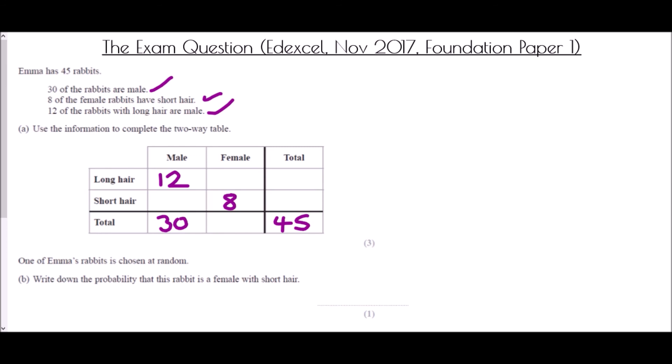It looks like we don't have enough information yet, but let's check. We can work out how many females there must be: 30 males and 45 in total means there must be 15 females. Knowing that, 8 of the females have short hair, so 7 of them must have long hair. For the males: 12 have long hair and there are 30 in total, so that means 18 have short hair. Then the totals for each type of hair: 12 plus 7 is 19 with long hair, and 18 plus 8 is 26 with short hair. Checking: 19 plus 26 is 45. We've got our three marks available.